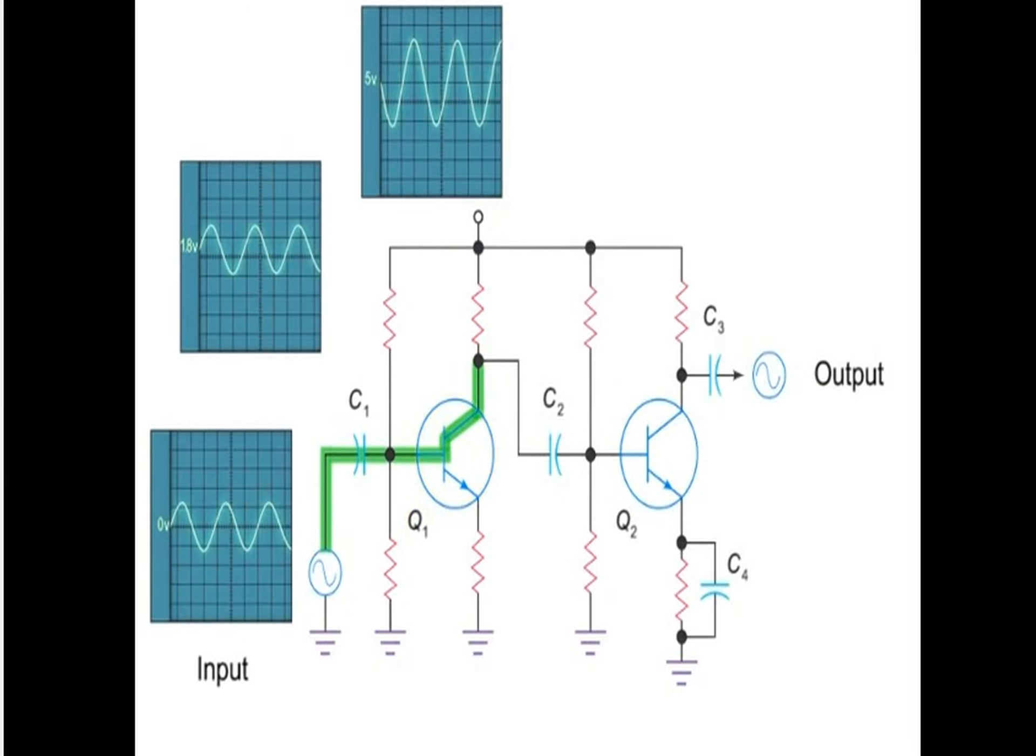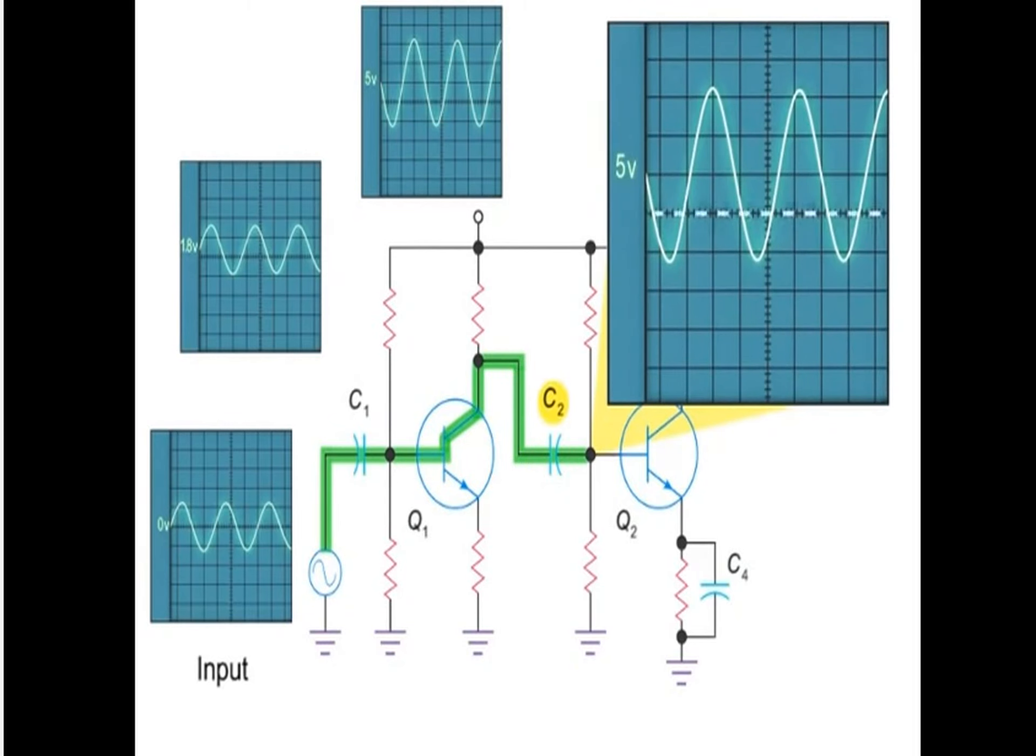Before reaching the second transistor, the signal passes through another coupling capacitor, C2, which also strips away the DC voltage. However, the signal will once again pick up a low DC voltage of 1.8 at the base of the second transistor.